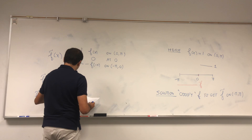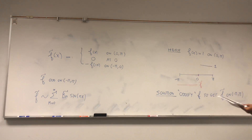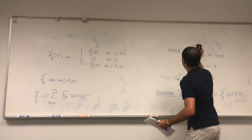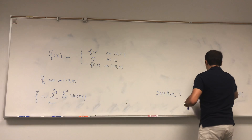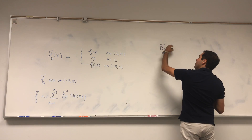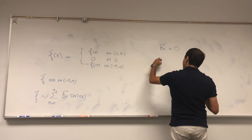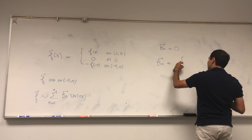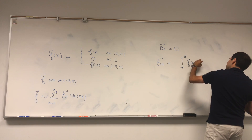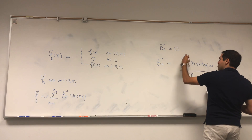So by what I said, f-tilde has an actual sine series — f-tilde can be expressed as a sine series. Let's call it sum of bm-tilde sine mx. And what is bm-tilde? It's just given by the hugging formula. So bm-tilde is the integral from minus pi to pi of f-tilde of x times sine mx dx, divided by pi.